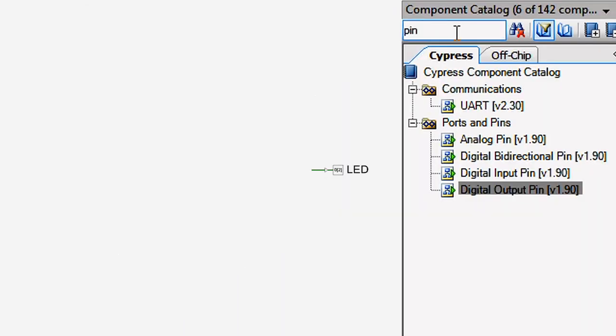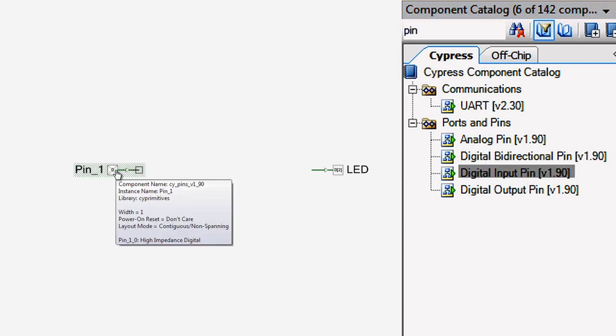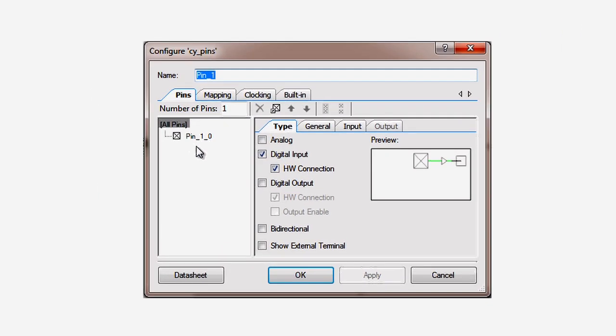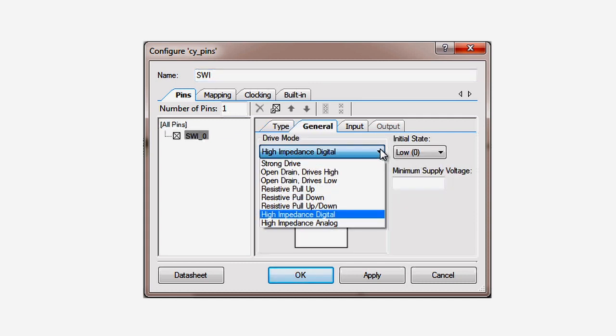Next, let's add a little bit of user control of the application by connecting a mechanical switch on our board to an input pin. We'll need another pin component from the catalog. This time we'll choose an input pin. Let's name it SW1 for switch. This switch is active low, which means that it's connected to ground on the board, and the pin will read a zero when it is pressed. We need to make sure that it reads a one when the button is not pressed, so we'll set the drive mode to be resistive pull-up.